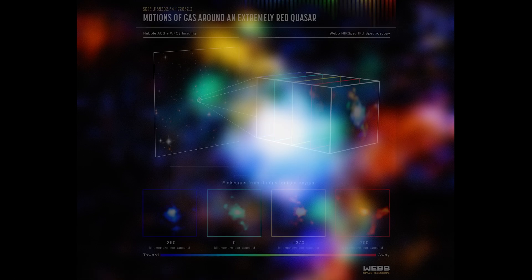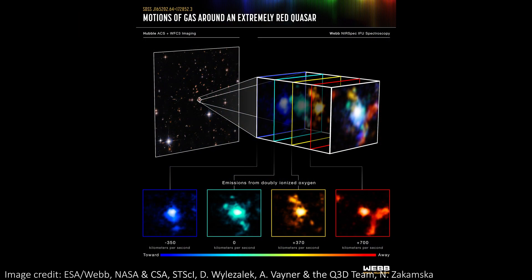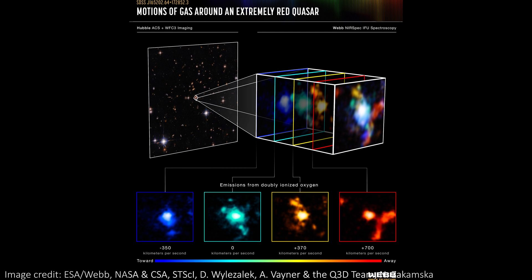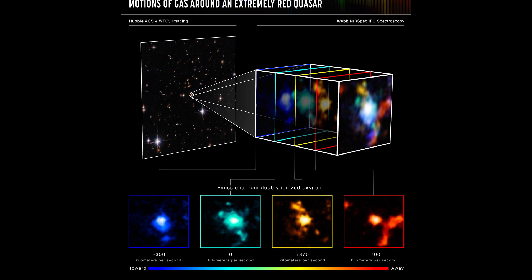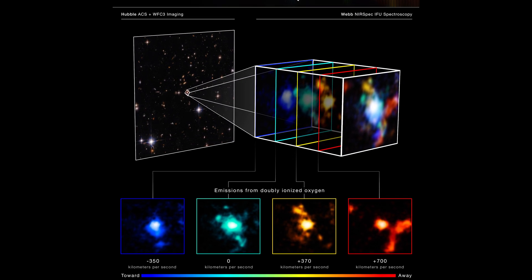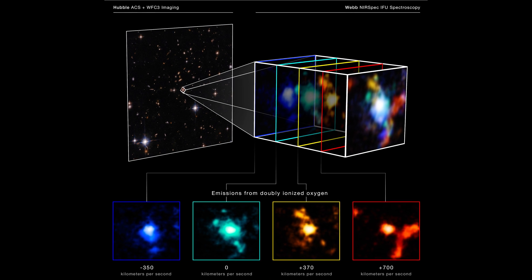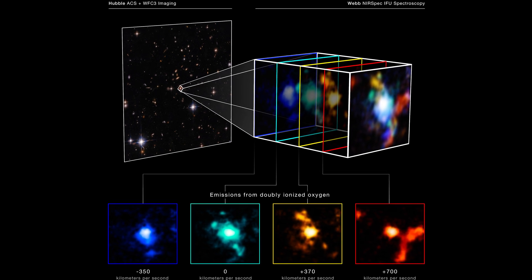Researchers were studying whether the powerful winds coming off of the black hole were pushing gas out of the galaxy and impacting the formation of stars. What they found though was a proto-cluster of galaxies around the quasar. That's a galaxy cluster in the very early stages of formation.